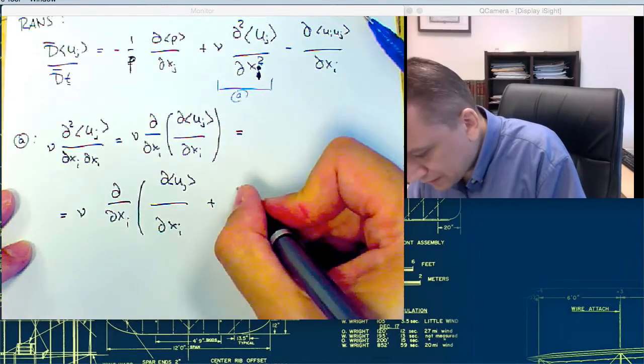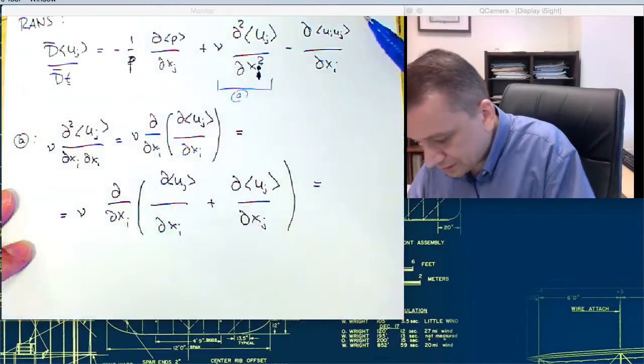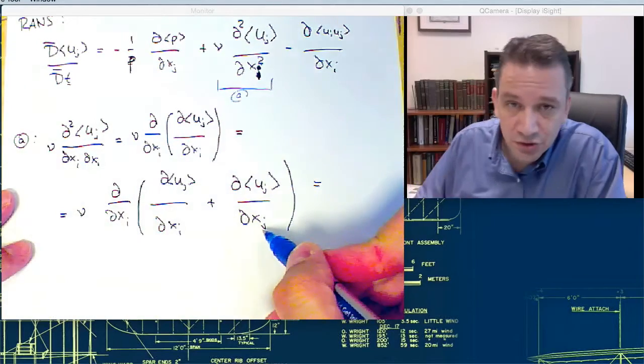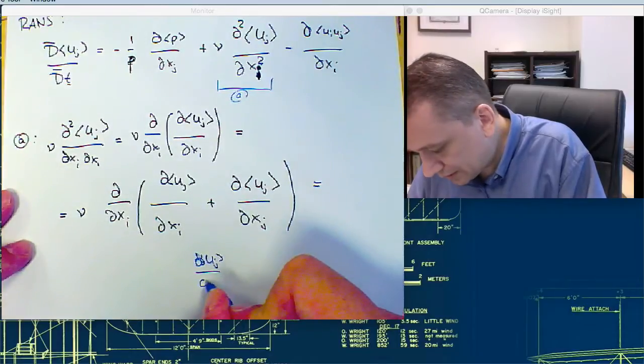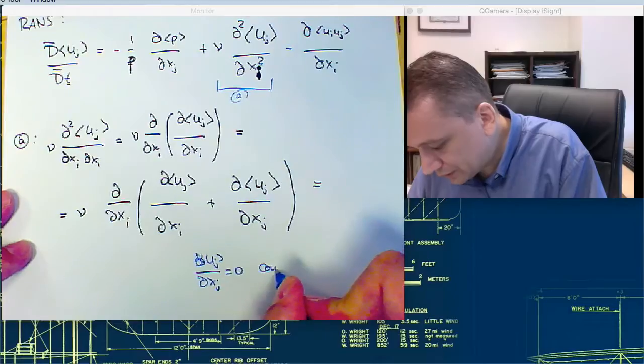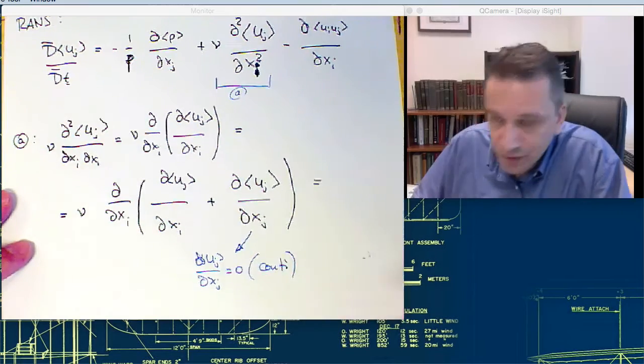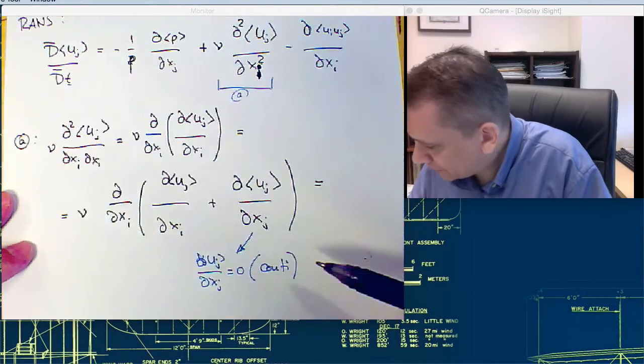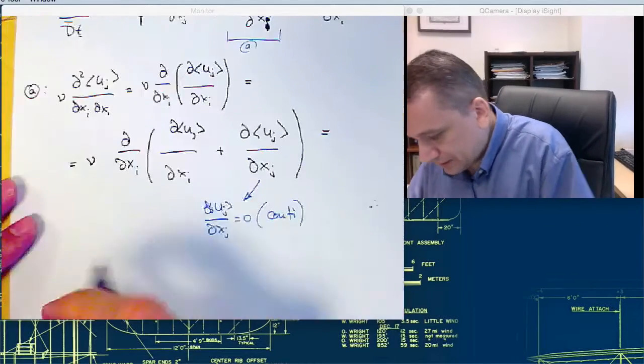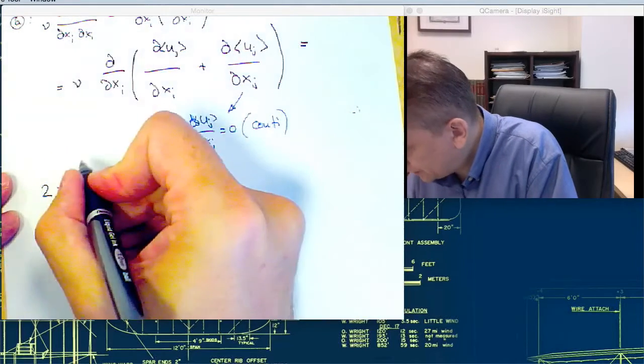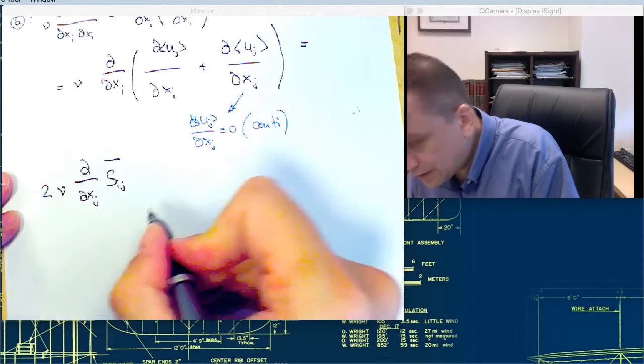We can rewrite that as nu times d over dxi. This one stays. Now d uj over dxi, this one is there as well. Plus I add another term here, d uj over dxj. Why can I add that? Because this term here, d uj over dxj, this one is the continuity equation. So I just want to add zero there, essentially. But with this, I can rewrite this one a little bit differently. I call this one 2 nu dxj times sij.